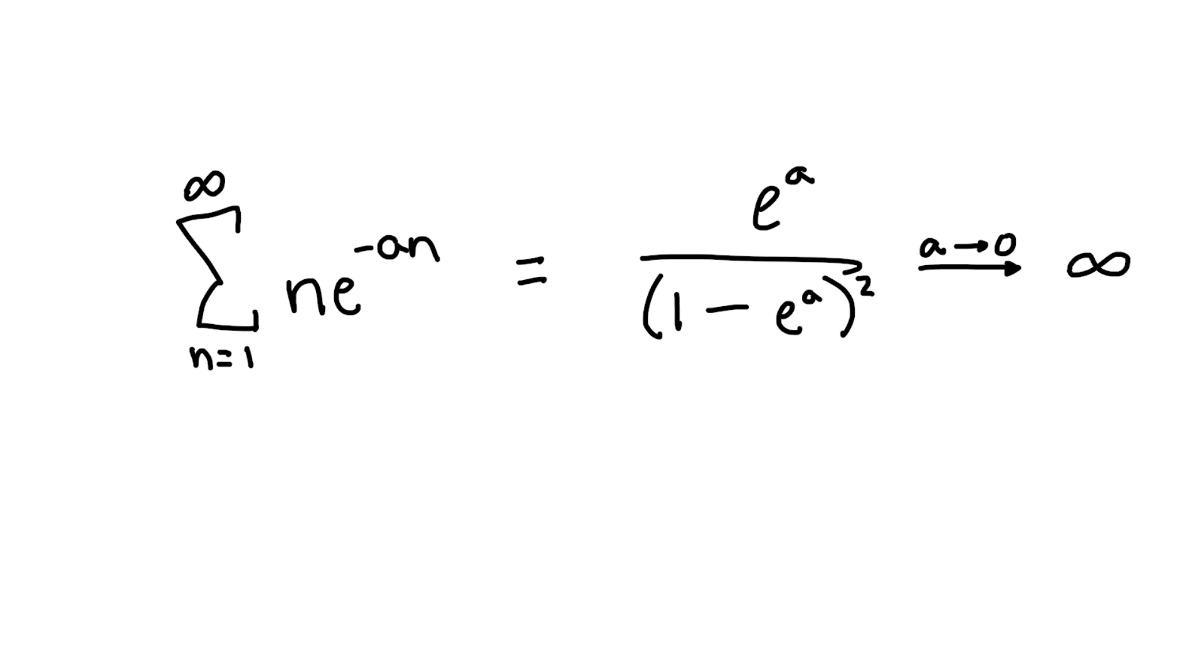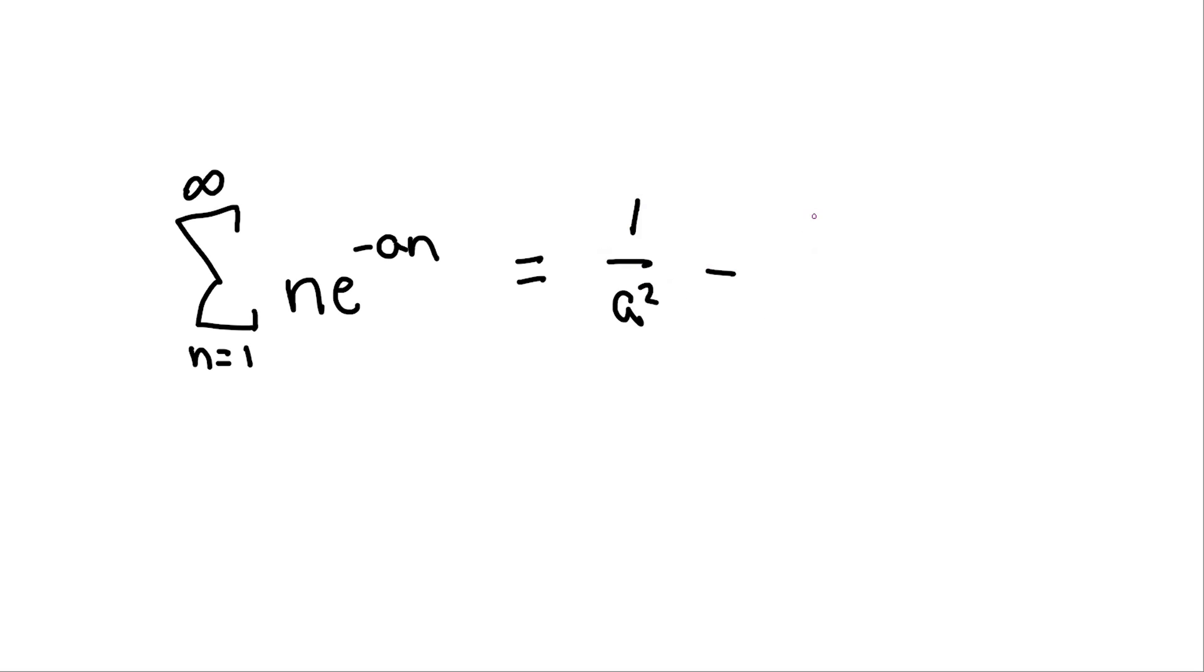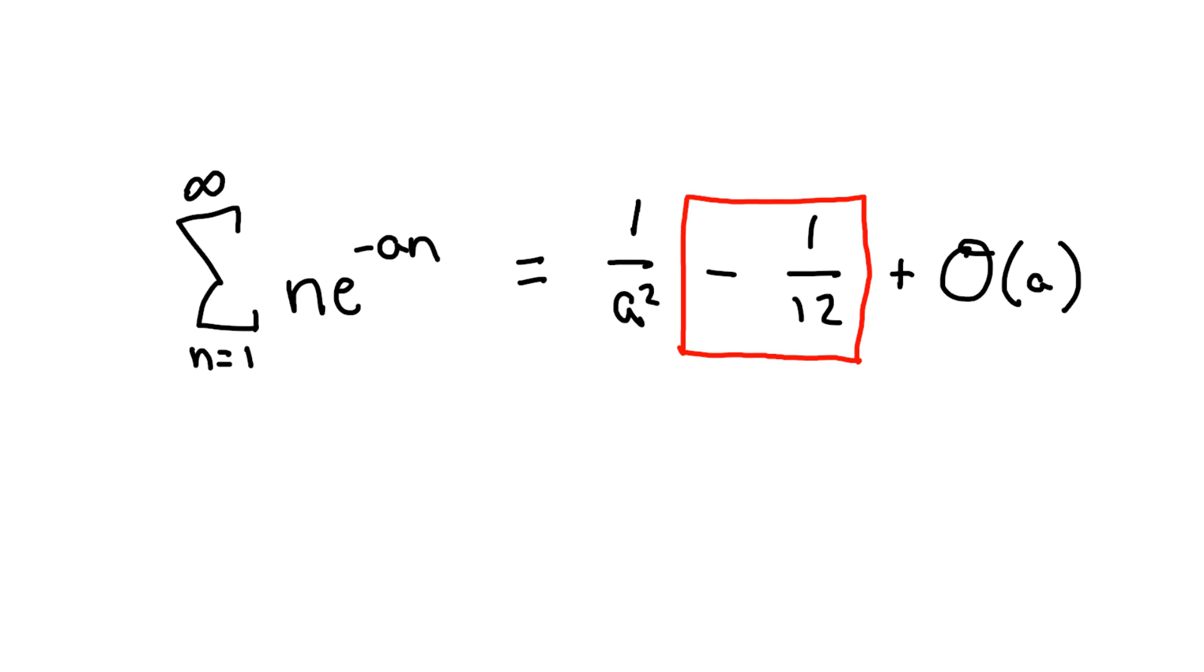However, we can still get some information out of this. We can expand this in terms of a, and recognize that any terms proportional to a or higher powers of a will vanish when we take a to zero. When we expand this, we find that the sum is equal to 1 over a squared minus 1 over 12 plus higher orders of a. See anything familiar?